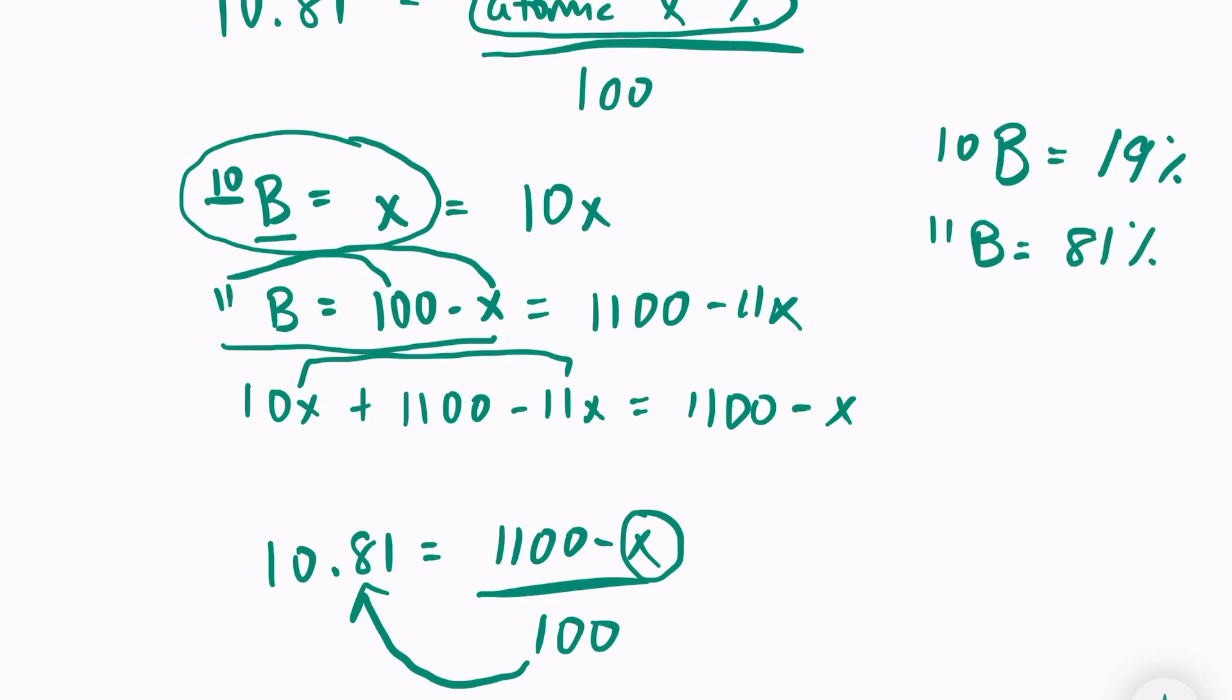And we can logically check this to make sure that we're on the right track. My average atomic mass is 10.81. And remember, the average atomic mass is not just the average between isotopes. If that were true, this would be 10.5.